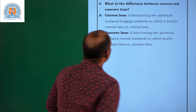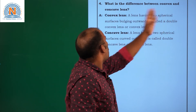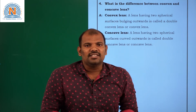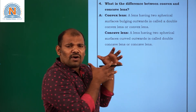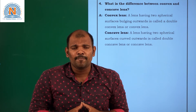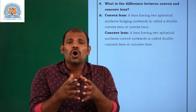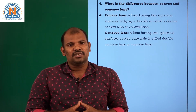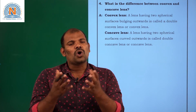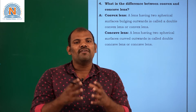Question number 4: What is the difference between a convex and a concave lens? As I mentioned, a lens is bounded with two spherical surfaces. If both spherical surfaces are concave, it is called a double concave lens. If both spherical surfaces are convex, it is called a double convex lens, or simply a convex lens.